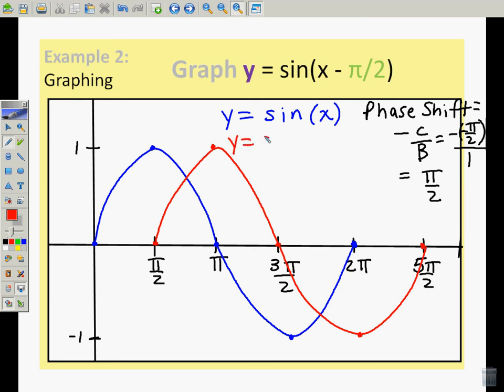When I connect the dots now, my red curve is y equals sine of x minus π/2. That is how phase shift affects our sine curve.